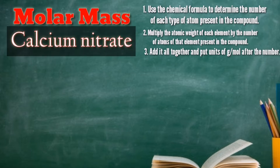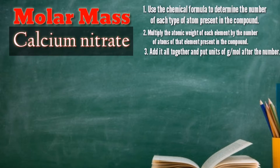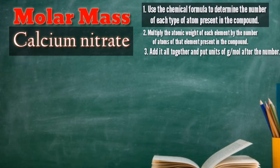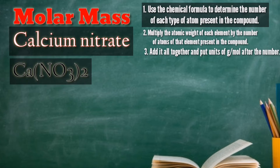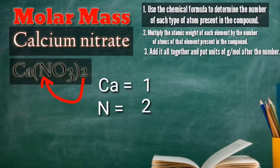What is the molar mass of calcium nitrate? Let's follow the three steps. First, use the chemical formula to determine the number of each type of atom present in the compound. The chemical formula for calcium nitrate is Ca(NO₃)₂. Based on the formula, we have one atom of calcium, two atoms of nitrogen, and six atoms of oxygen.